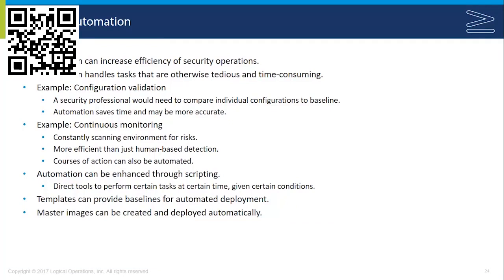One example would be the validation of a configuration. That requires a security professional to go through an entire system and compare each individual configuration to an accepted baseline. If you delegate that task to an automated tool, it's going to save you time and may produce more accurate results. Another example would be continuous monitoring — constantly scanning an environment for threats, vulnerabilities, and other areas of risk. Automating that process is far more efficient than relying on individuals to detect issues.